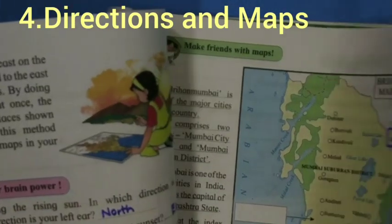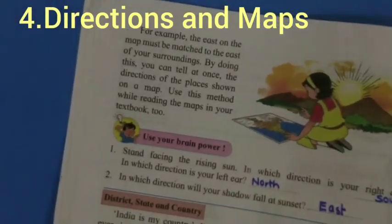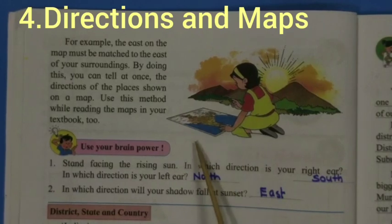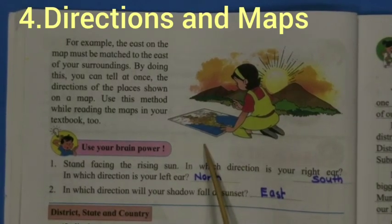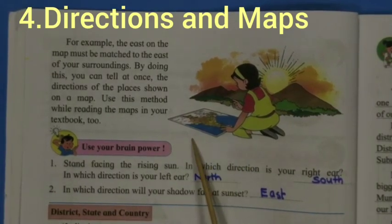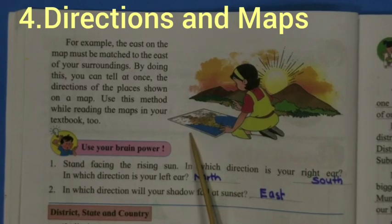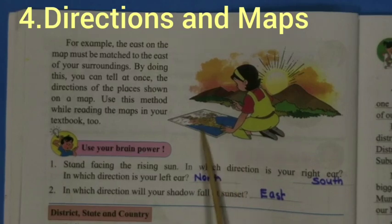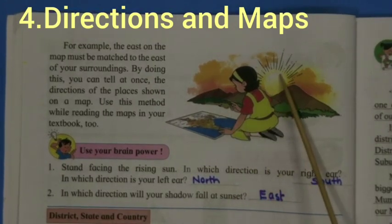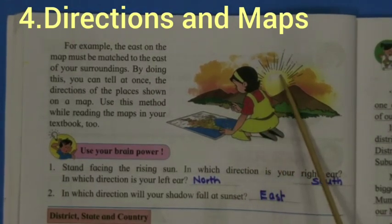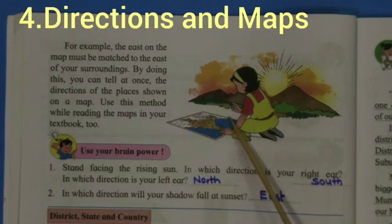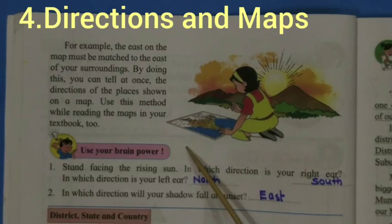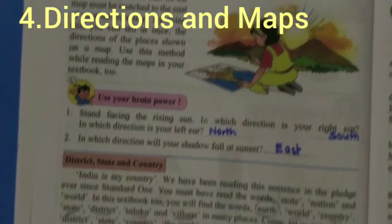Whenever you want to read a map, you have to follow certain things. This girl is reading a map and she has laid it on the ground. That is very important — you have to keep the map level, matching with the east direction. Where the sun is, that is the east direction.